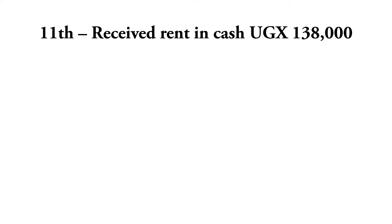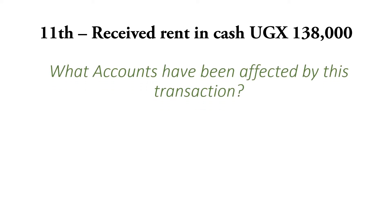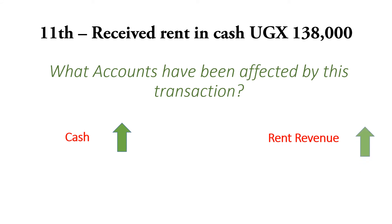When you pay for rent, that's an expense. When you receive rent, you're probably having housing units that you're renting out, and when you receive rent from your tenants, that is a form of revenue. So when you receive this cash of 138,000, the amount of cash you have in the business is going to increase. The accounts affected: cash is increasing, and our rent revenue has also increased.